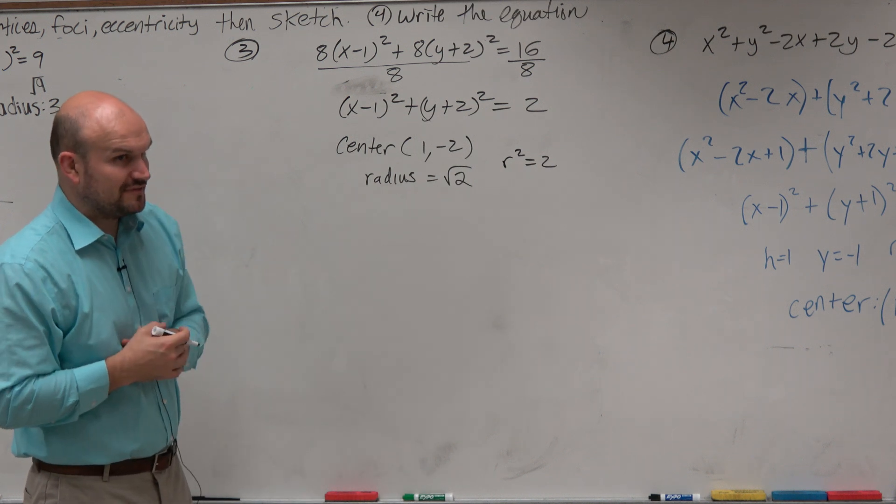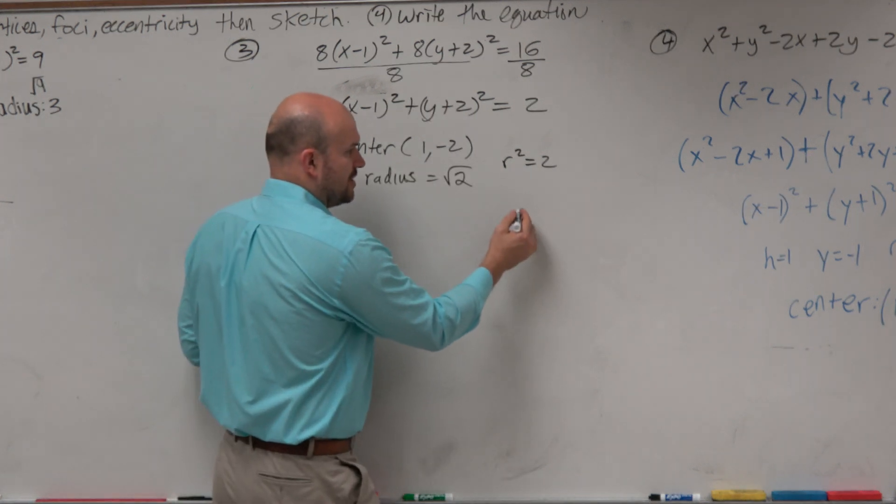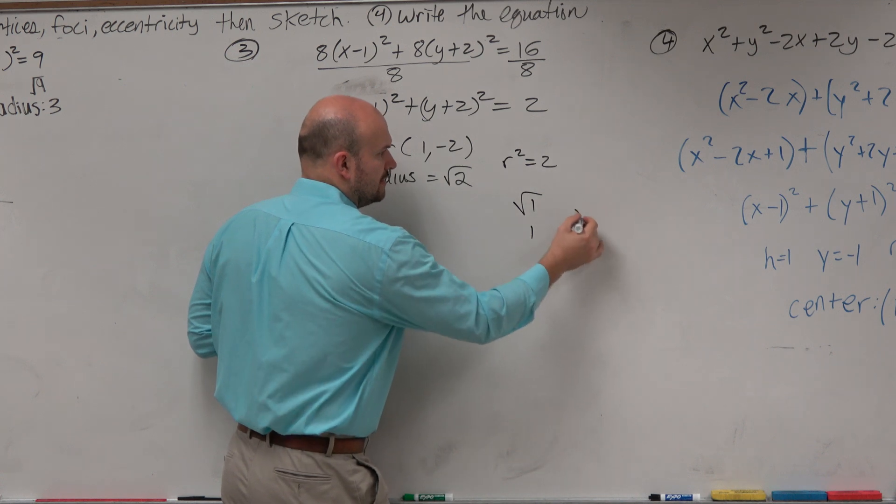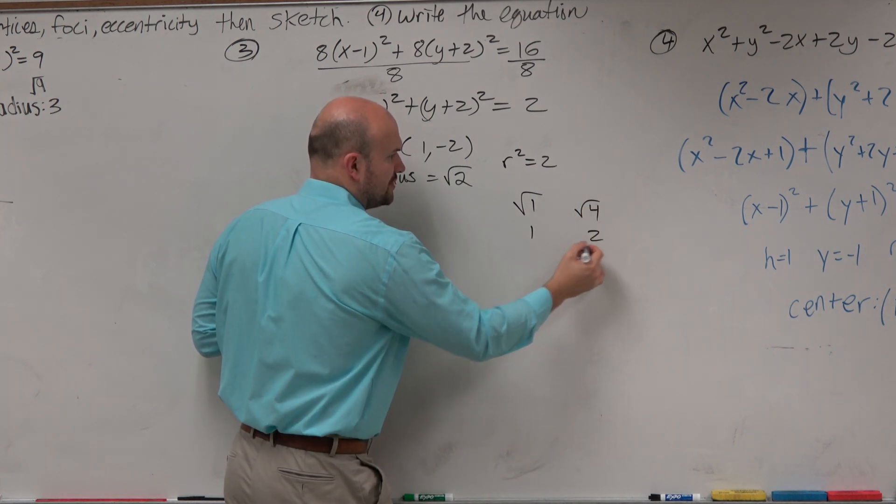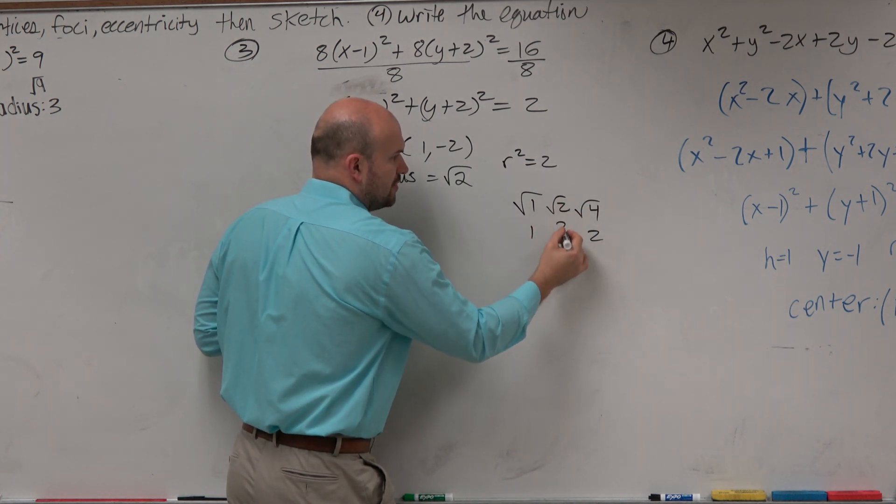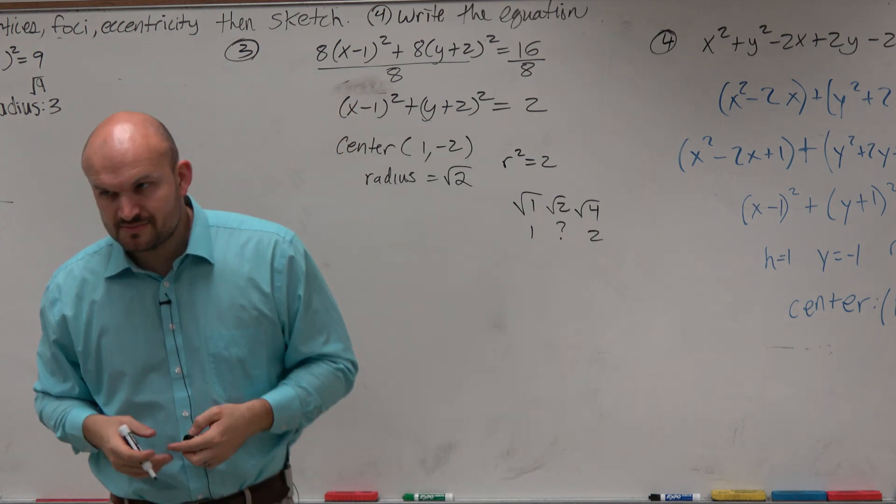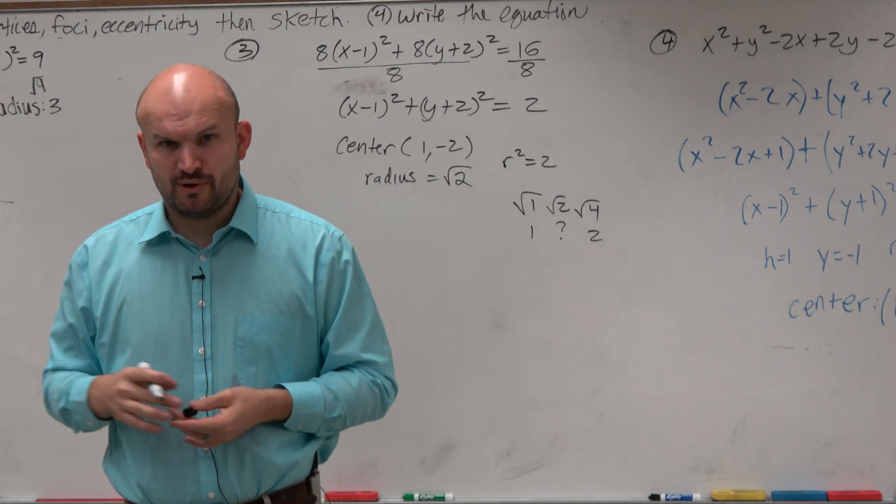Now, to sketch the graph, this one kind of gets a little difficult. So √1 = 1, the √4 = 2. So √2, I don't know what it is, but wouldn't you guys agree it's somewhere in between 1 and 2?